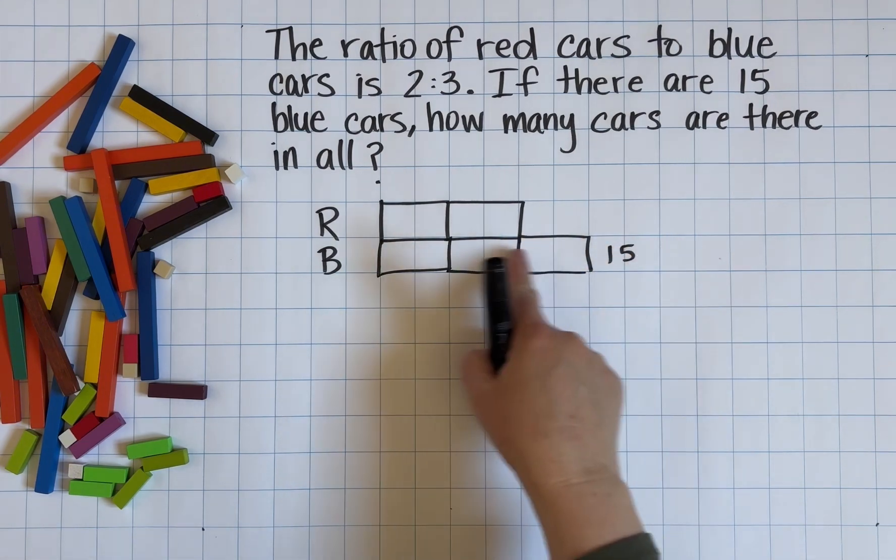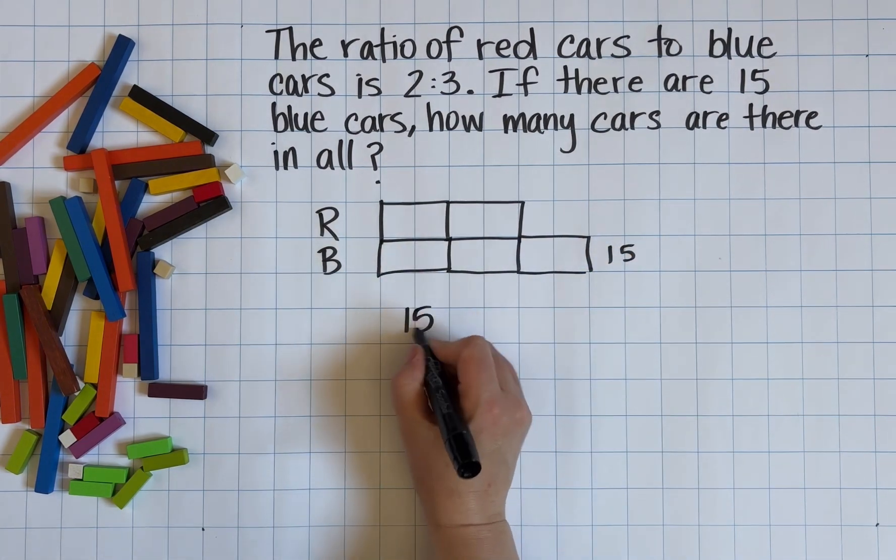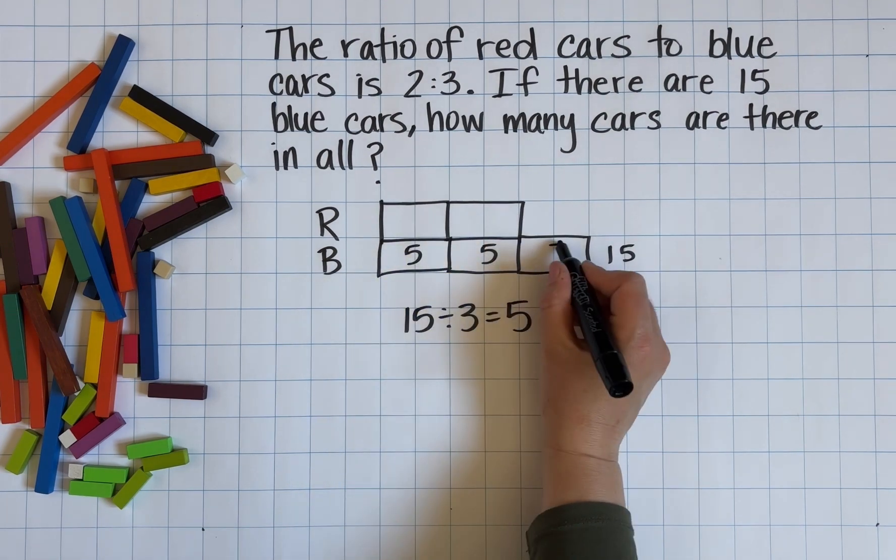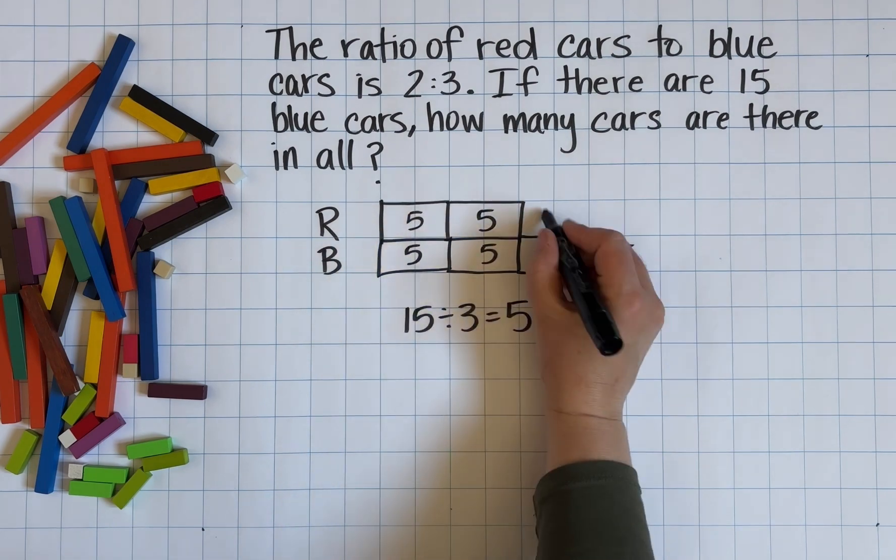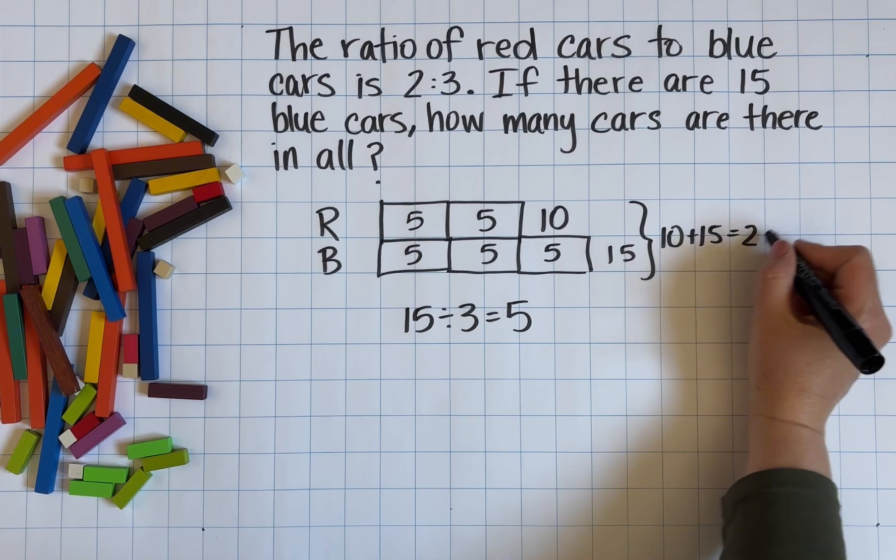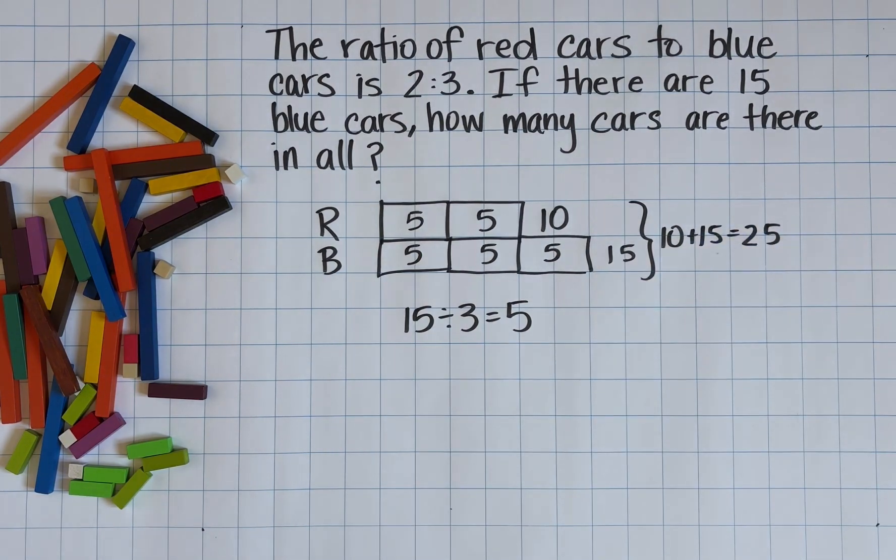So we know that our ratio is 2:3. All of our parts are equal sizes. We know that there are 15 blue cars, so we can simply divide that by three parts to figure out that there are five cars in each part, which means that there are also 10 red cars. So our total is 25.